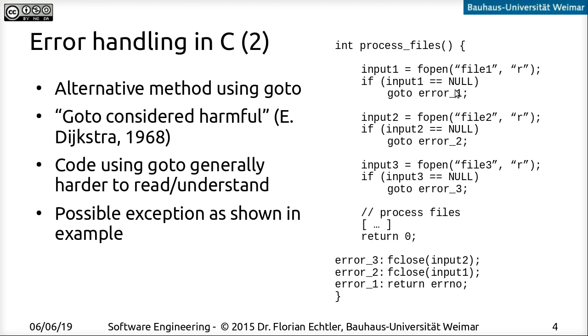So what's going on here is that depending on which file fails, you go either to the label error one, two or three. And the important part about this goto instructions here is that the execution of the code will simply continue downwards from the label you jump to. So if you go to error three, then all three of these statements will be executed. If you go to error two, then only the second and third will be executed. And for error one, only the last one.